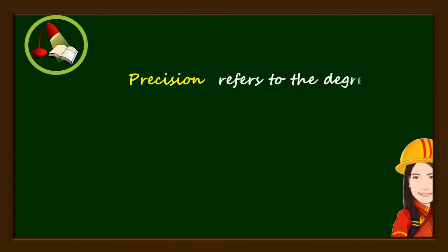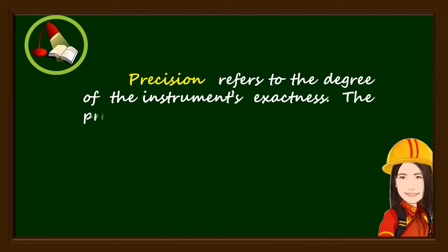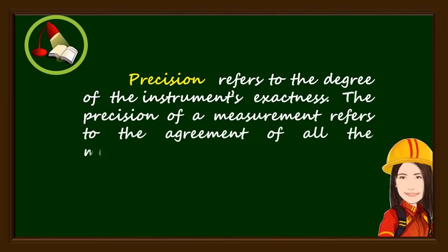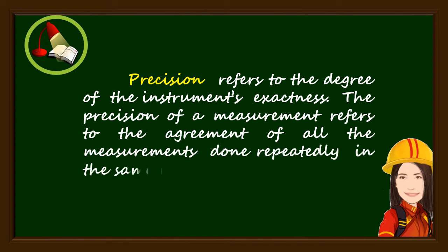Precision refers to the degree of the instrument's exactness. The precision of a measurement refers to the agreement of all the measurements done repeatedly in the same manner.